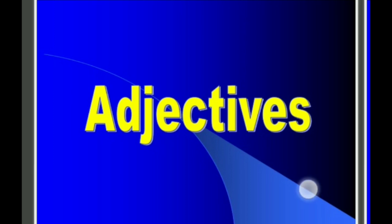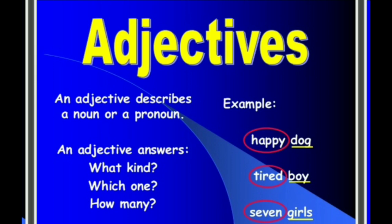Today's lesson is adjectives. An adjective is something that modifies or describes a noun or a pronoun. To identify an adjective in a sentence, you can ask three questions: 'What kind?', 'Which one?', or 'How many?' The answer you get will be the adjective. For example: happy dog, tired boy, and seven girls. The nouns here are dog, boy, and girls.